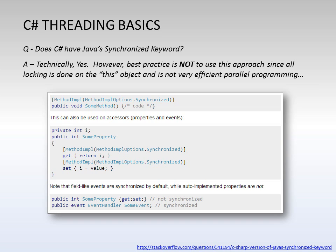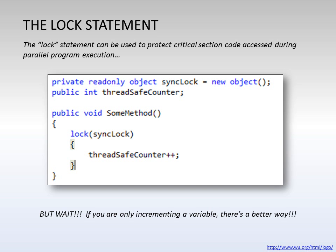Let's talk about some of the C-Sharp threading basics. One of the first questions that comes up a lot since C-Sharp is so similar to Java is: does C-Sharp have Java's synchronized keyword? The answer is technically yes, but using it is not the preferred or best practice since all locking in C-Sharp is done on the 'this' object. The lock statement provides a great alternative to using the synchronized keyword, and in C-Sharp it's typically used to protect critical section code that's accessed during parallel program execution.